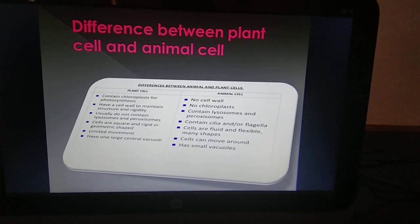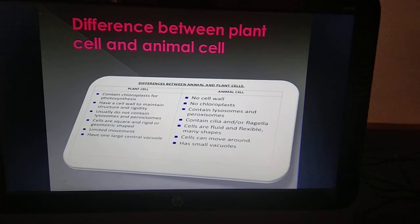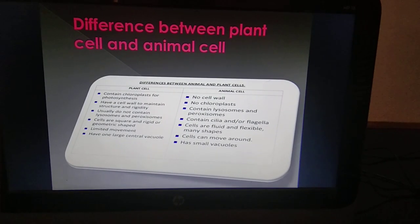In animal cells, except the protozoa and euglena, no animal cell possesses plastids.